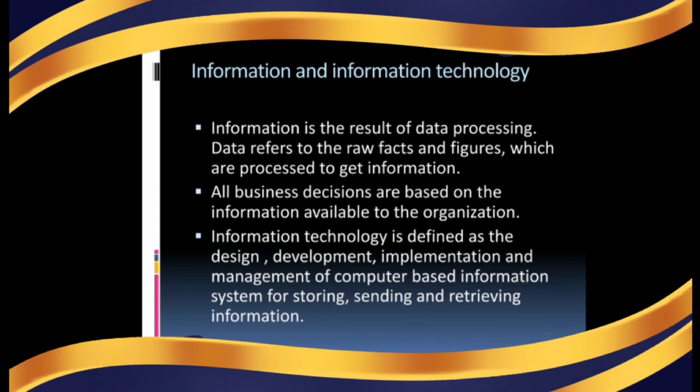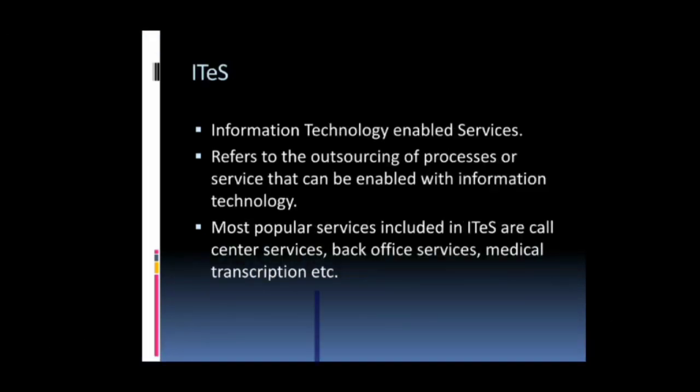Now, information — what is that? Information is the result of data processing. Data refers to the raw facts and figures which are processed to get information, and that particular result is known as information. All business decisions are based on the information available to the organization. Information technology is defined as the design, development, implementation and management of computer-based information systems for storing, sending and retrieving different kinds of information.